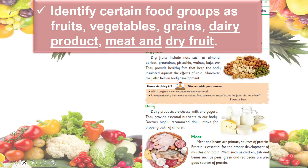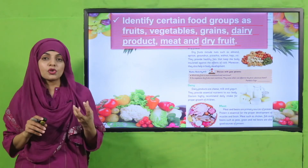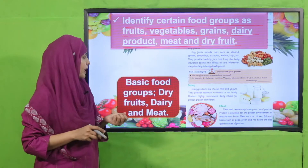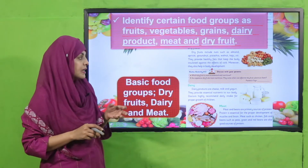In the next lecture, students identified the five major food groups: fruits, vegetables, grains, dairy products, meat, and dry fruits. We studied dairy products, meat, and dry fruits as food groups. These five major food groups are very important and provide us with different types of nutrition. The basic food groups covered here are dry fruits, dairy, and meat.